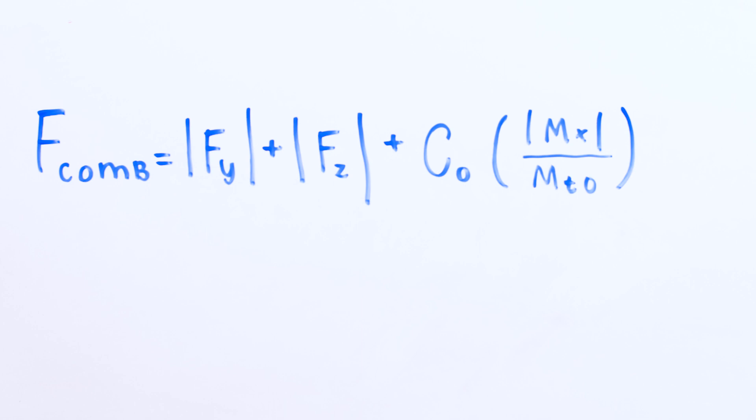For a single linear guide with two bearings, the combined static load equation becomes a bit simpler because there are no moments in the y or z directions. The second bearing resolves these moments into forces in the y and z directions.